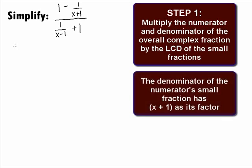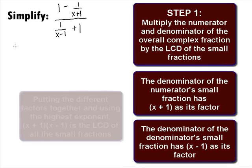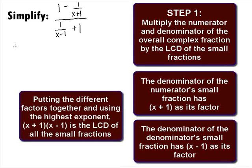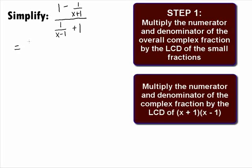The denominator of the numerator's small fraction is a factor of x plus 1. The denominator of the denominator's small fraction is a factor of x minus 1. Putting these together, we get the least common denominator of all the small fractions to be x plus 1 times x minus 1. Let's multiply the numerator and denominator of the complex fraction by this LCD: x plus 1 times x minus 1.